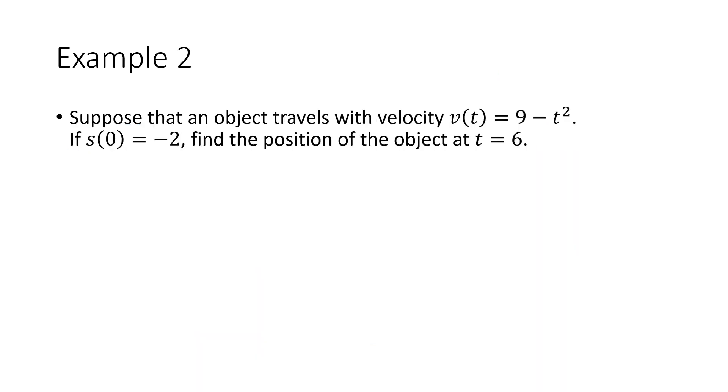Now what do we do if we have a formula? Well, same basic idea. So again, we're given a formula for the velocity, we're given an initial position, and then we're asked to find the position at some future time, in this case, t equals 6.